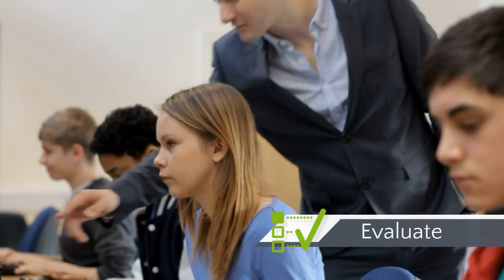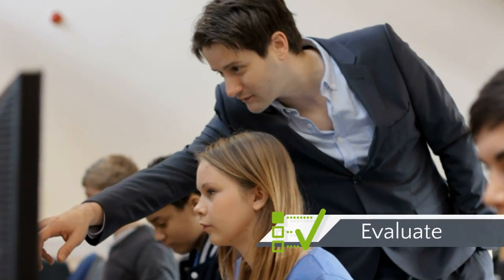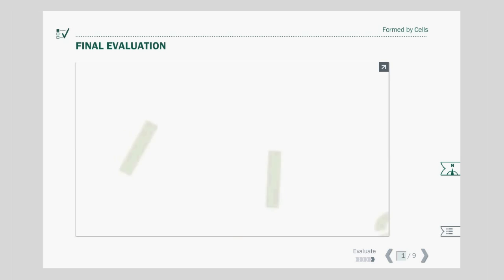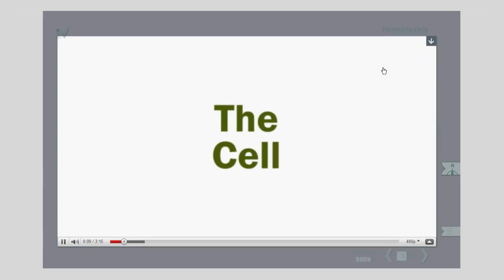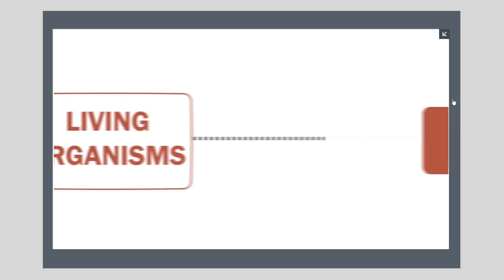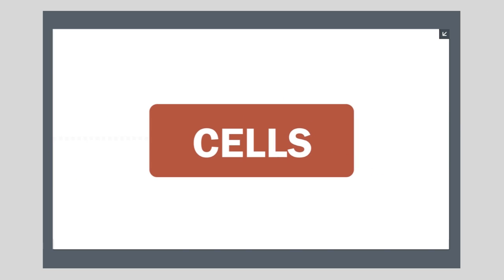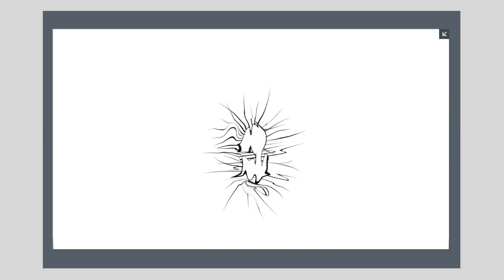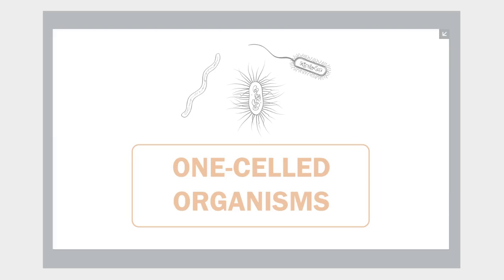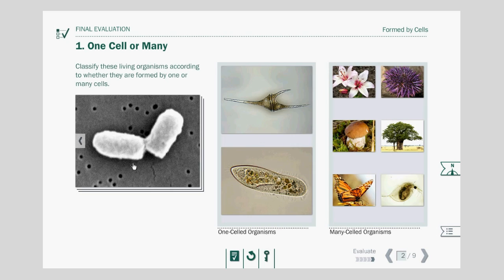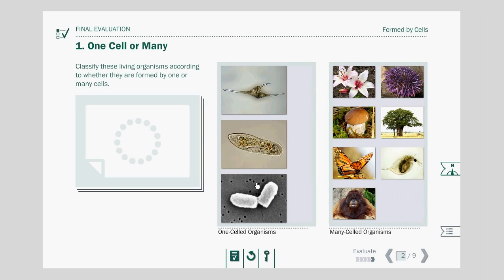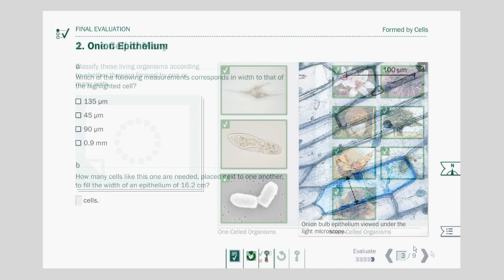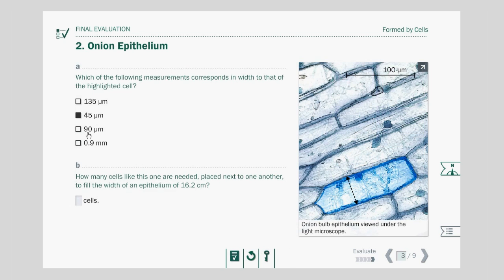And fifth stage: Evaluate. Just before evaluation, students have the opportunity to review the unit through a dynamic video. Then, a final self-correctable test based on the assessment of student skills will allow teachers to evaluate students' progress toward educational objectives.